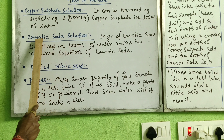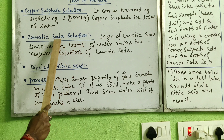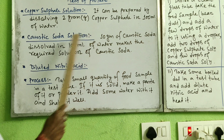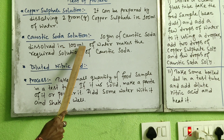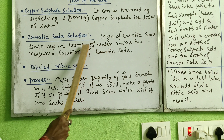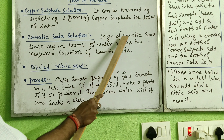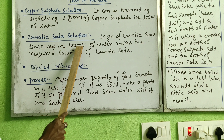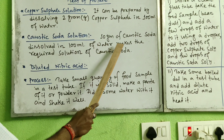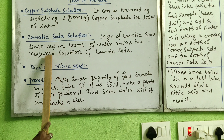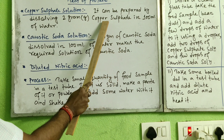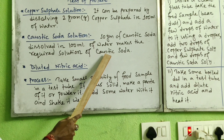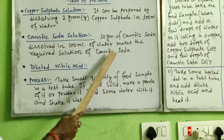One more solution you will require is caustic soda solution. To prepare it, dissolve 10 grams of caustic soda in 100 ml of water. Take 10 grams of caustic soda with a spatula, add 100 ml of water, and you will get the required caustic soda solution. These two solutions — copper sulfate and caustic soda — are basically what you need to test for protein with different food samples.